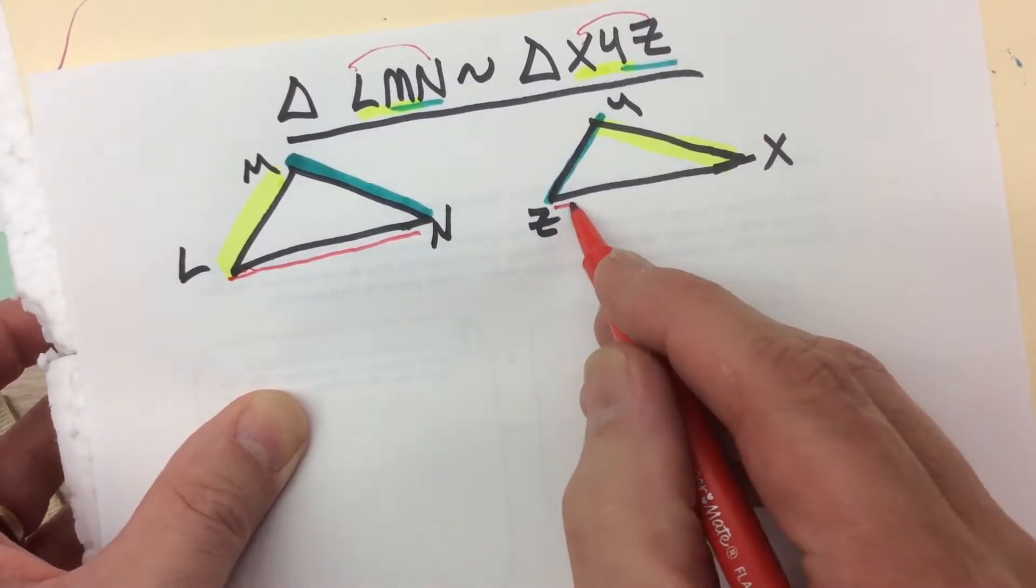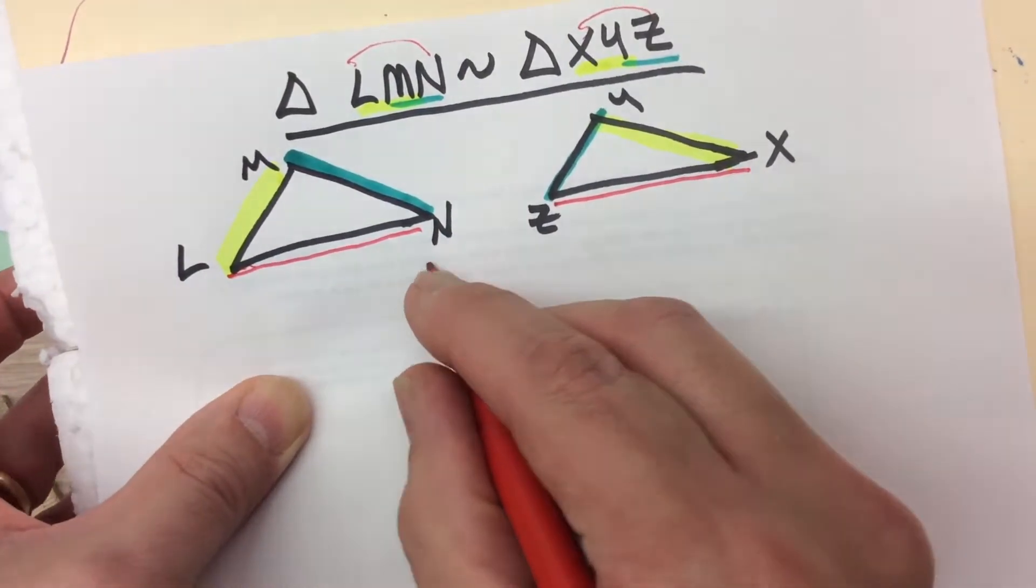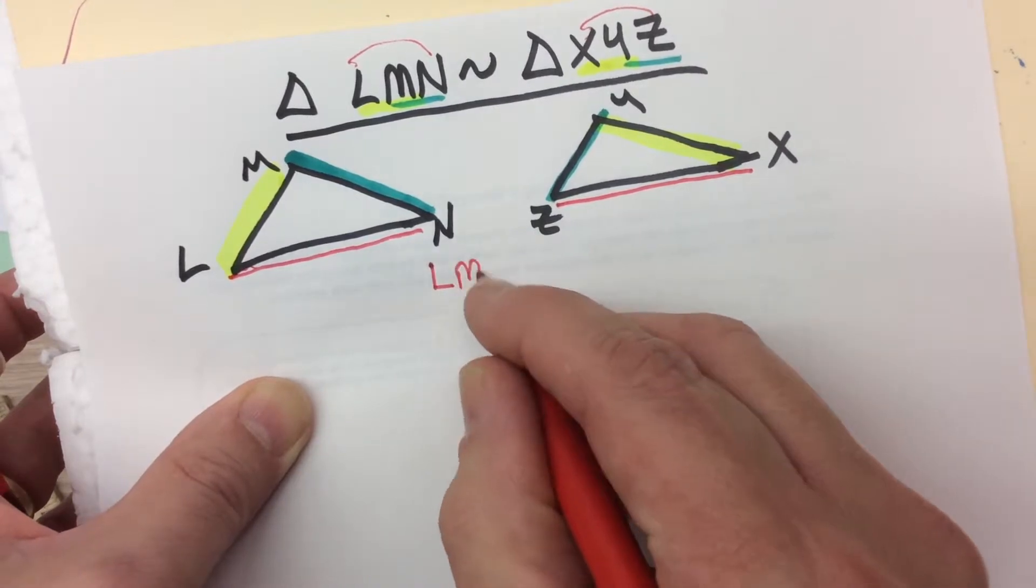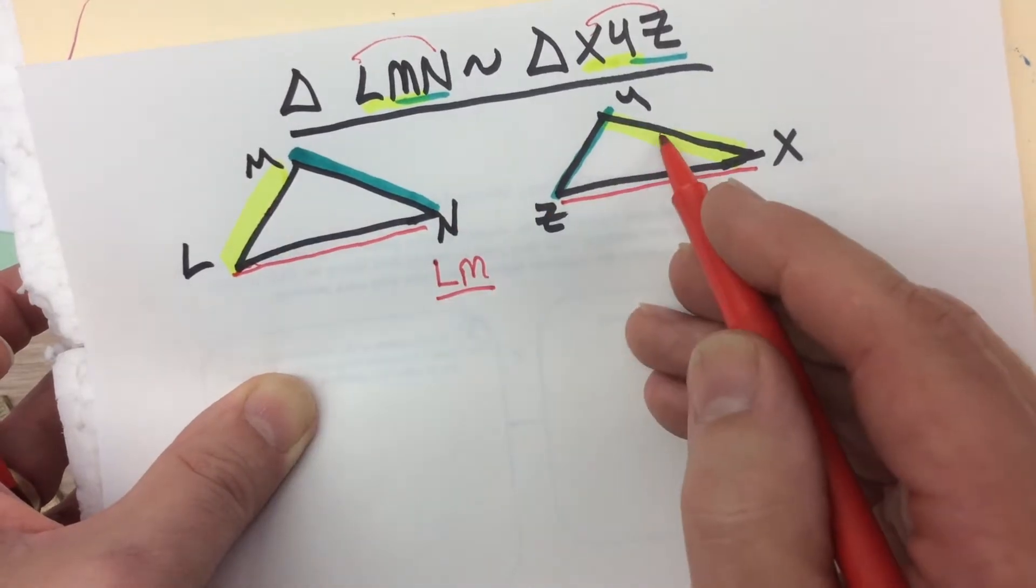Those are corresponding sides. And the ratios are going to be the same no matter which two corresponding side pairs you compare.